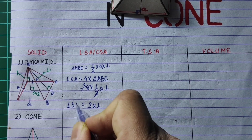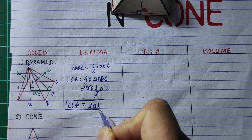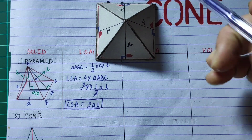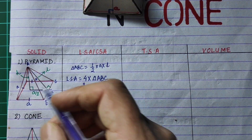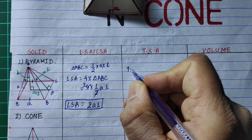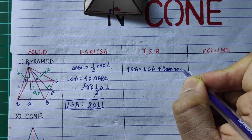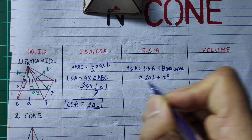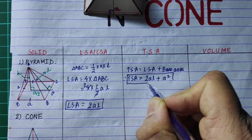So finally, the lateral surface area equals 2 into the length of the base into the slant height, written as 2AL. Then the total surface area equals the lateral surface area plus the base area. TSA of the square-based pyramid is 2AL plus A squared.